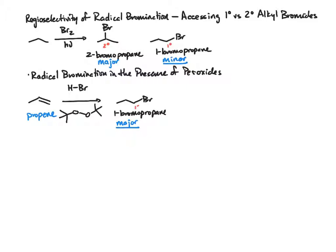The first thing that happens in a radical reaction is initiation. The initiation step in this case is going to be cleavage of the di-tert-butyl hydrogen peroxide bond. If we treat that with light, we're going to cleave this bond.